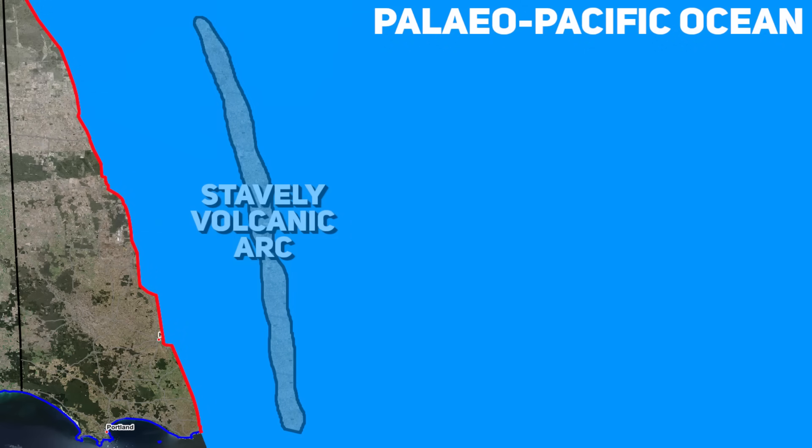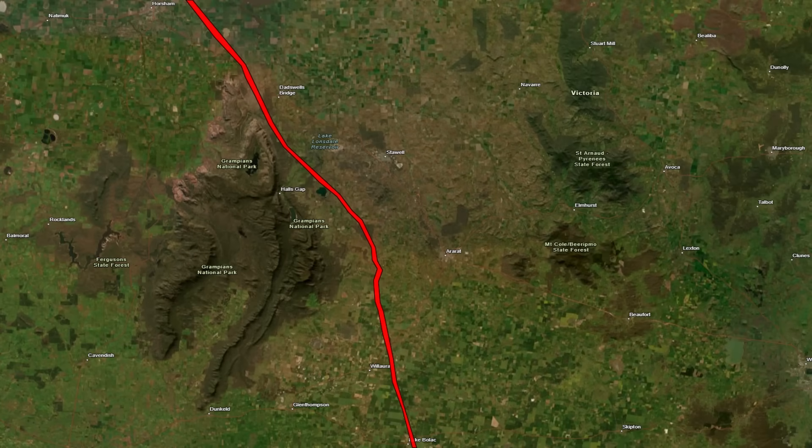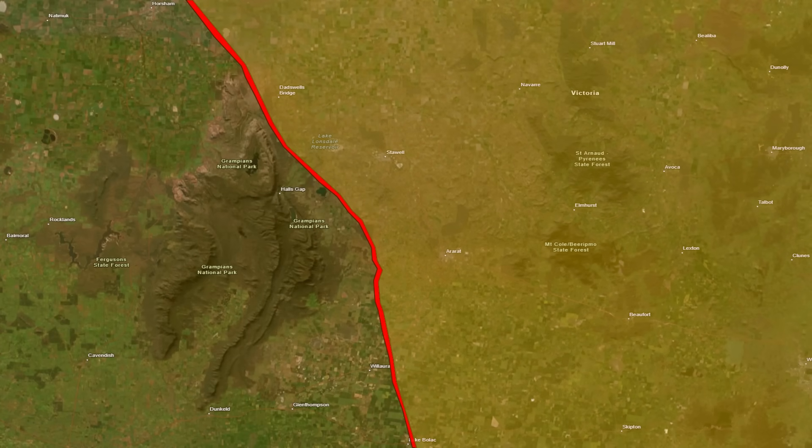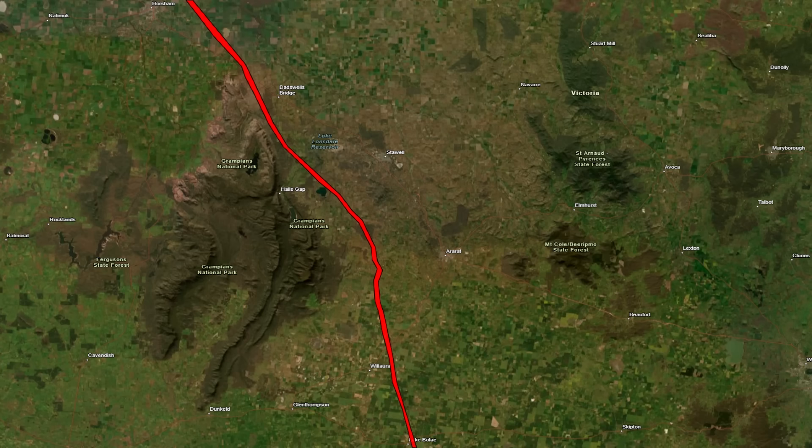This was the moment when volcanic island arcs and oceanic crust were slammed into the ancient edge of the Australian continent, a massive event that fused two vastly different geological provinces together. I won't go too deep into this as I've made a video on it that will be released soon. Subscribe if you want to see that, but keep the 500 million year timing in mind.